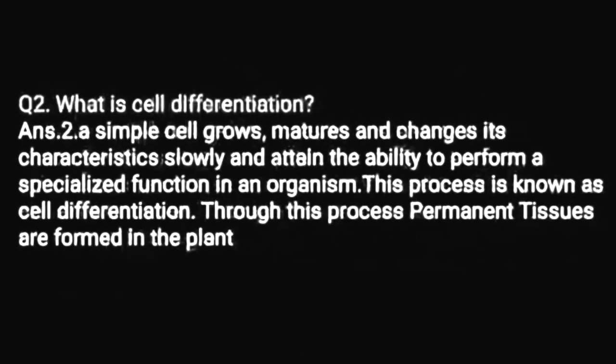What is cell differentiation? A simple cell grows, matures and changes its characteristics slowly and attains the ability to perform a specialized function in an organism. This process is known as cell differentiation. Through this process, permanent tissues are formed in the plant. Cell differentiation is also the process by which permanent tissue is made.